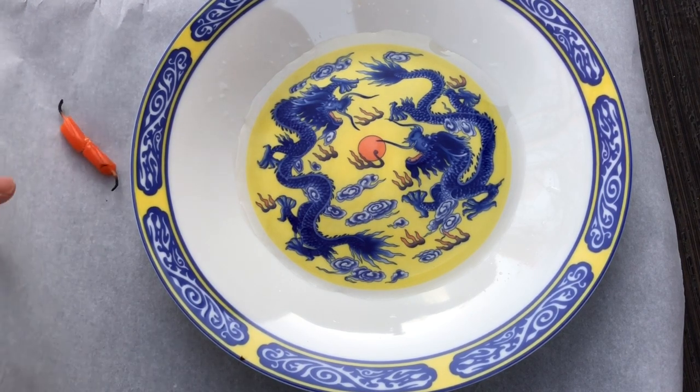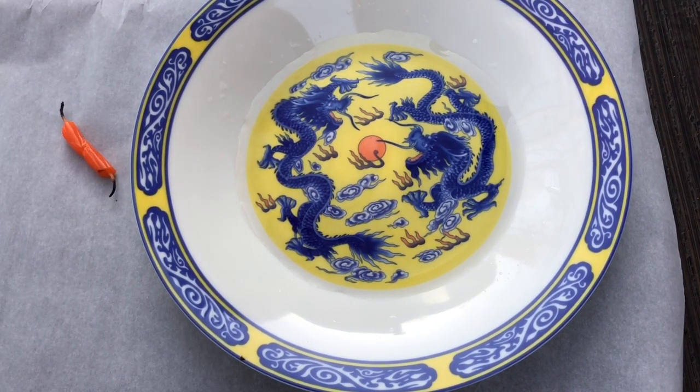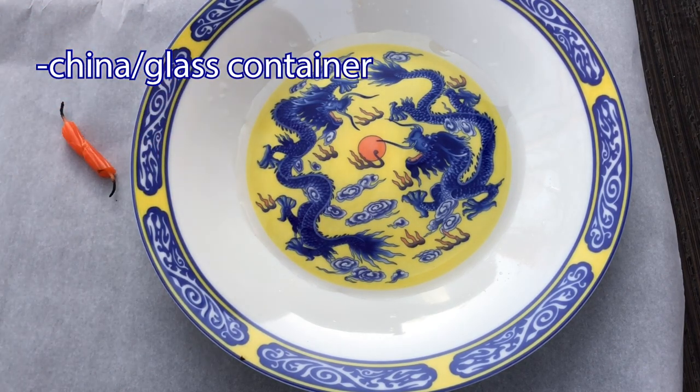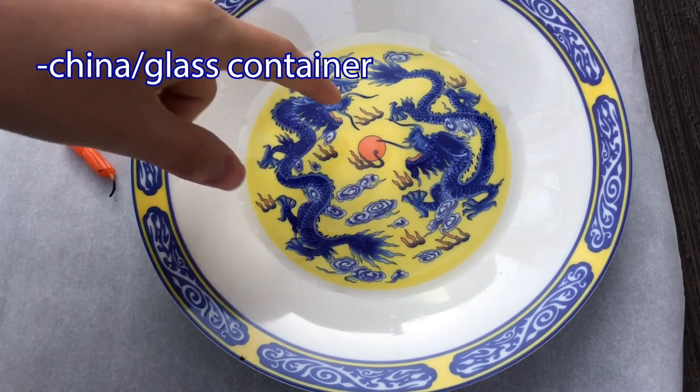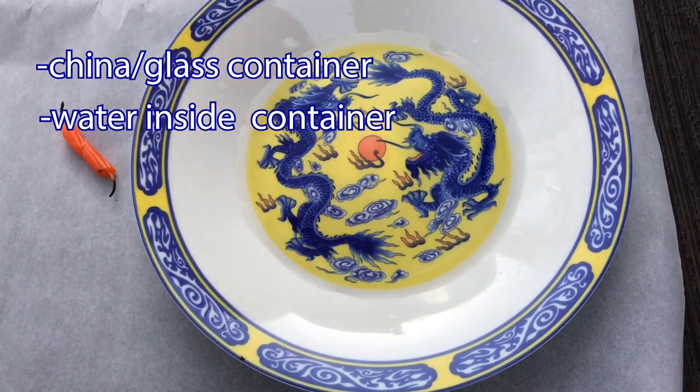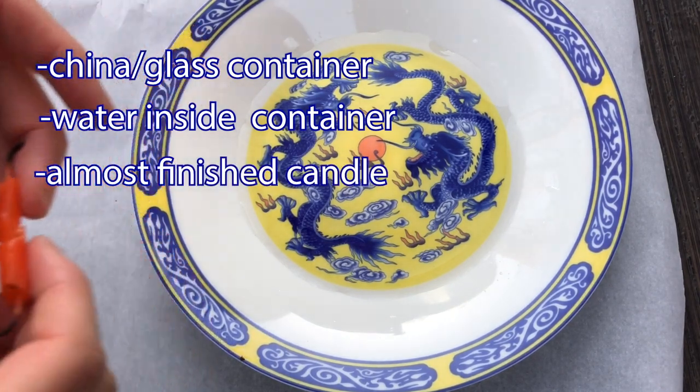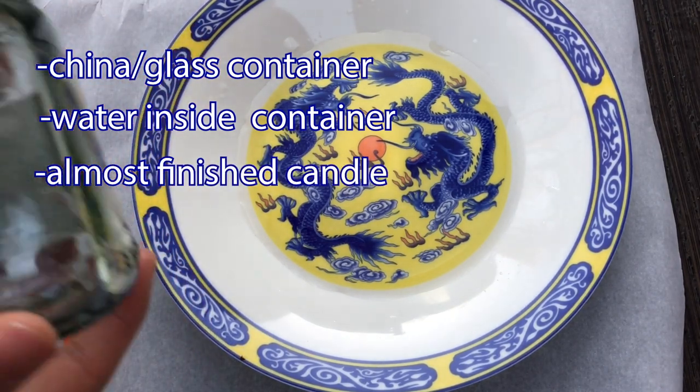There's a wax proof background as usual because we're going to be using fire. There's a china or glass plate and there's water inside the glass or china container. We also need a candle that is almost finished as well as a glass jar.